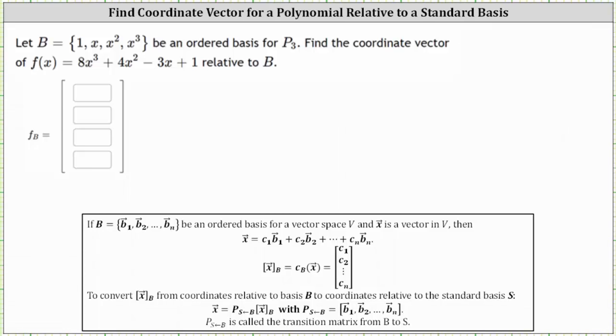Let the set B be an ordered basis for P₃. Find the coordinate vector of f(x) = 8x³ + 4x² - 3x + 1 relative to B.